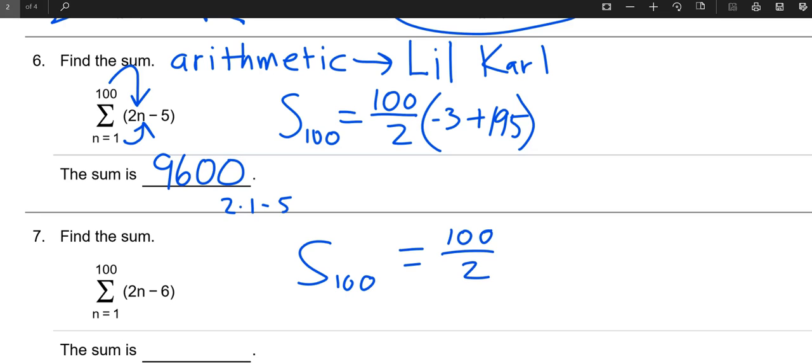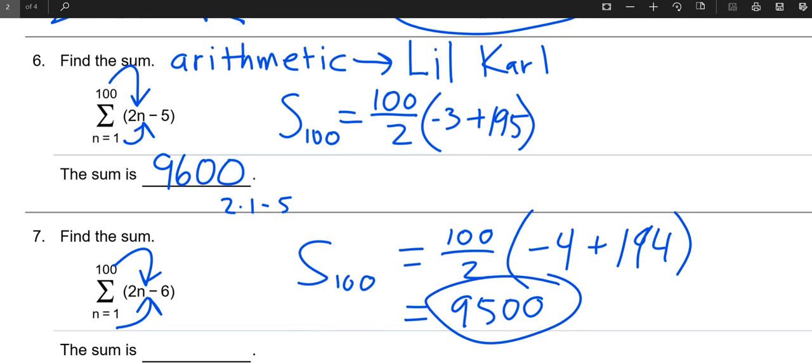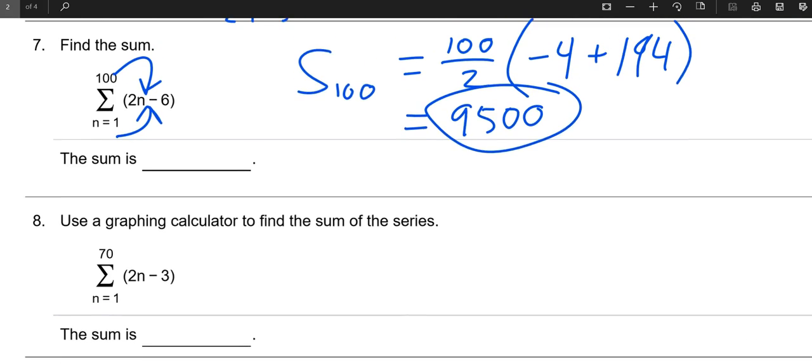We know there's one hundred terms in this one too. Plug in a one, two times one minus six, that's negative four. And then we'll plug in a hundred, two times one hundred minus six is one ninety-four. Type on the machine, I think you get about ninety-five hundred. Yeah, that's pretty much all there is to that one.